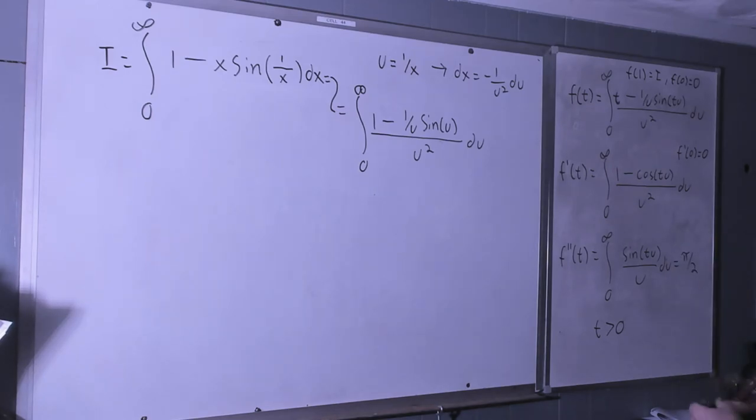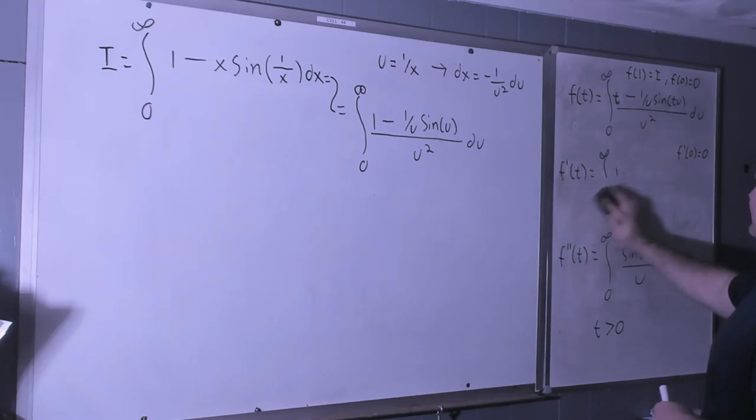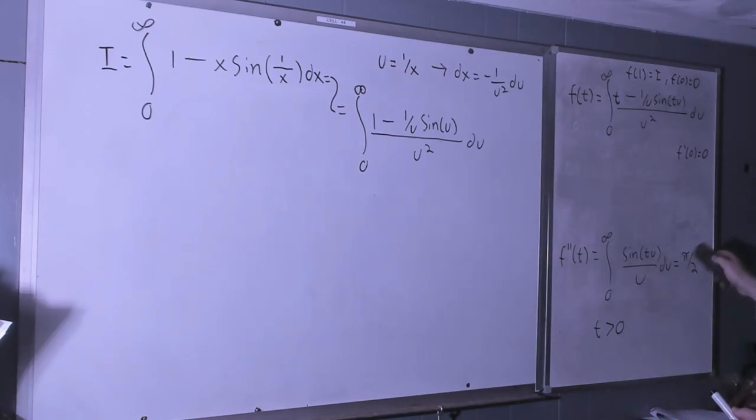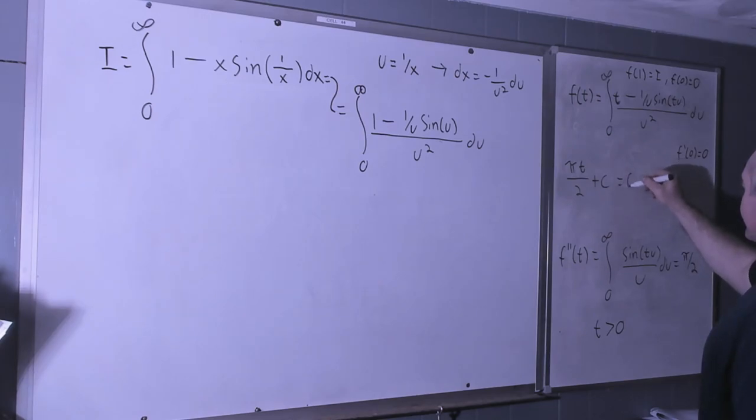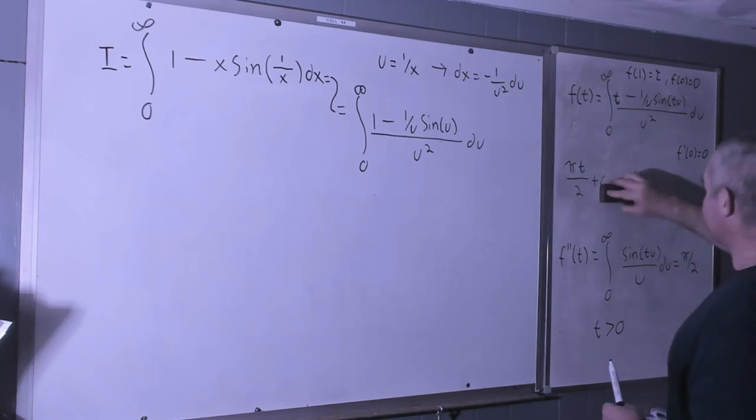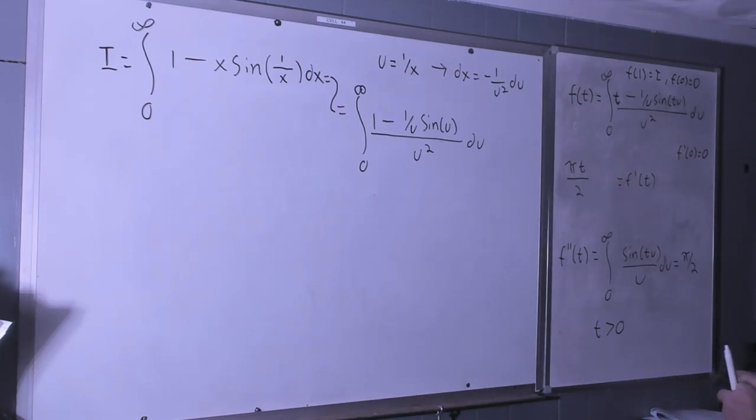Okay so if we have f double prime is equal to pi over two, it's our f prime. Rewrite it just taking the anti-derivative of pi over two with respect to t. Because I hope you would agree that if our f double prime of t is equal to pi over two, plus c. All right that's our f prime. But we know f prime at zero is equal to zero, that means that zero is equal to c. f prime of t.